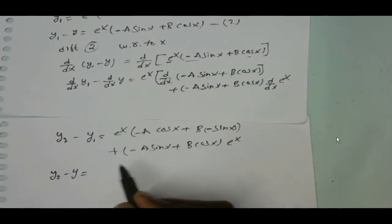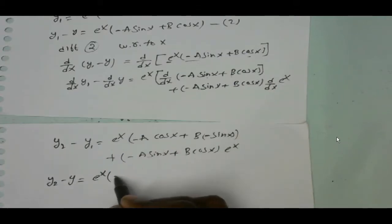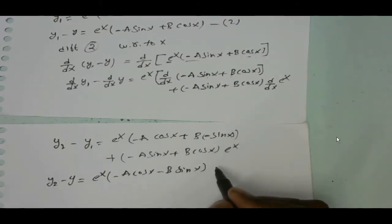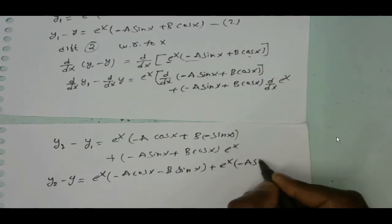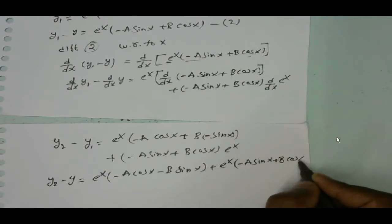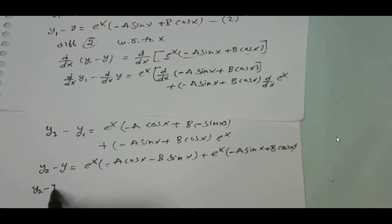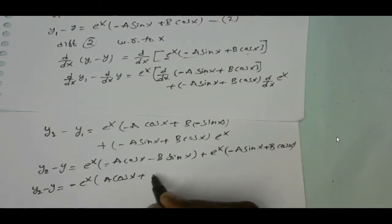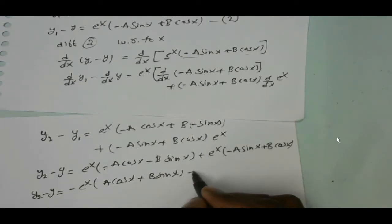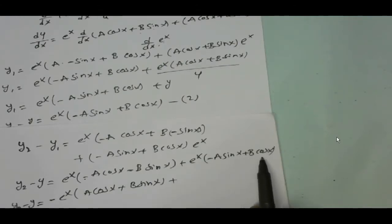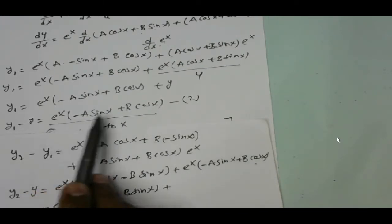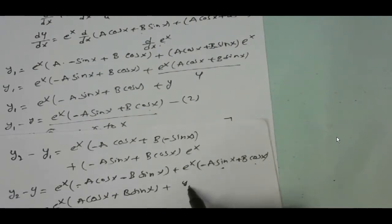So y₂ minus y₁ equals e power x into minus a cos x minus b sin x, plus e power x into minus a sin x plus b cos x. Taking minus as common: minus e power x of a cos x plus b sin x, plus e power x of minus a sin x plus b cos x. In place of e power x of minus a sin x plus b cos x we can write y₁ minus y from the second equation.